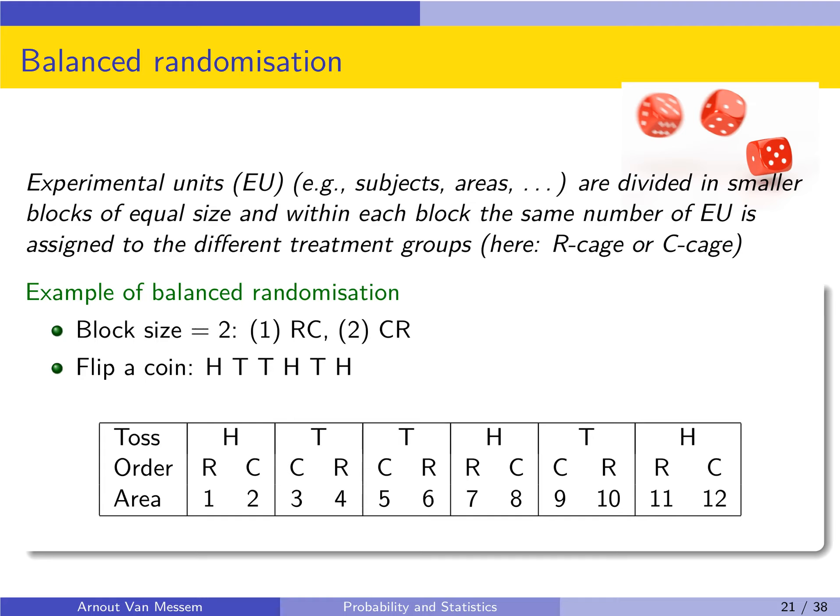What we then do is we define the areas. And then we have to decide the order in which we place the cages. So you can do this by flipping a coin. Assume that heads is RC, so here the first option is first the R cage then the C cage. We assign this to heads. The second option is first the C cage and then the R cage. We assign this to tails.